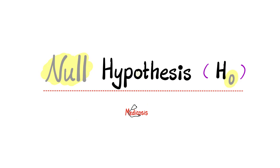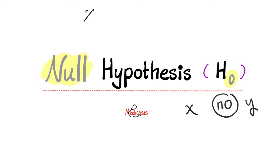The first topic we'll talk about today is the null hypothesis. Null means nothing — it means no. It means that there is no correlation between X and Y. So let's say you are conducting a study to figure out whether X can lead to Y. For example, can cigarette smoking cause lung cancer? The null hypothesis will say that there is no correlation between cigarette smoking and lung cancer.